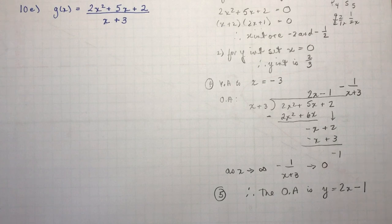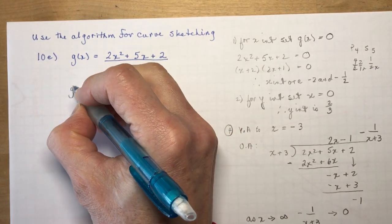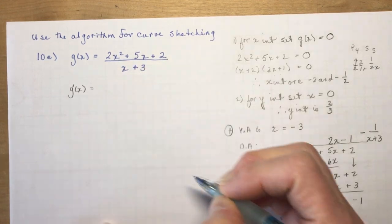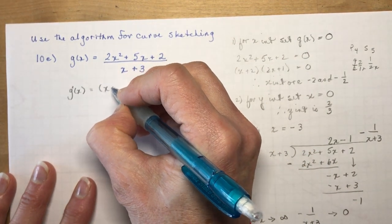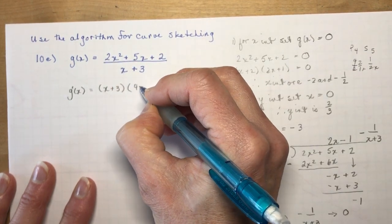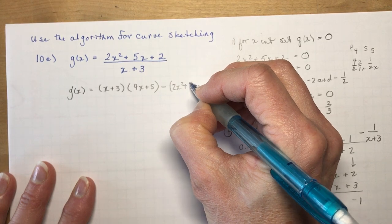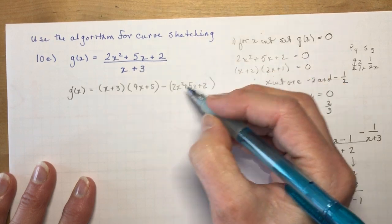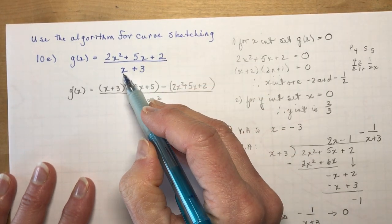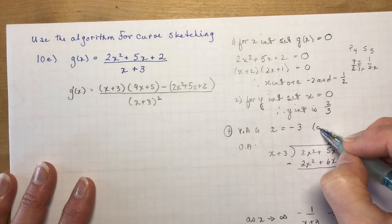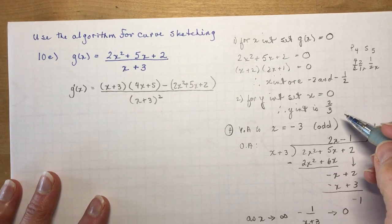Now I'm going to find if there are any maximum or minimum values. I need to take the derivative and find where the first derivative equals zero. This is a rational function, so I need to use the quotient rule: ho·d(high) minus high·d(ho), all over ho squared. The derivative of the top is 4x + 5. Make sure you put it in brackets because it's everything minus, and d(ho), the derivative of the bottom, is just 1, all over ho squared. Also note the vertical asymptote x = −3 is an odd asymptote, so the direction will be opposite on either side.